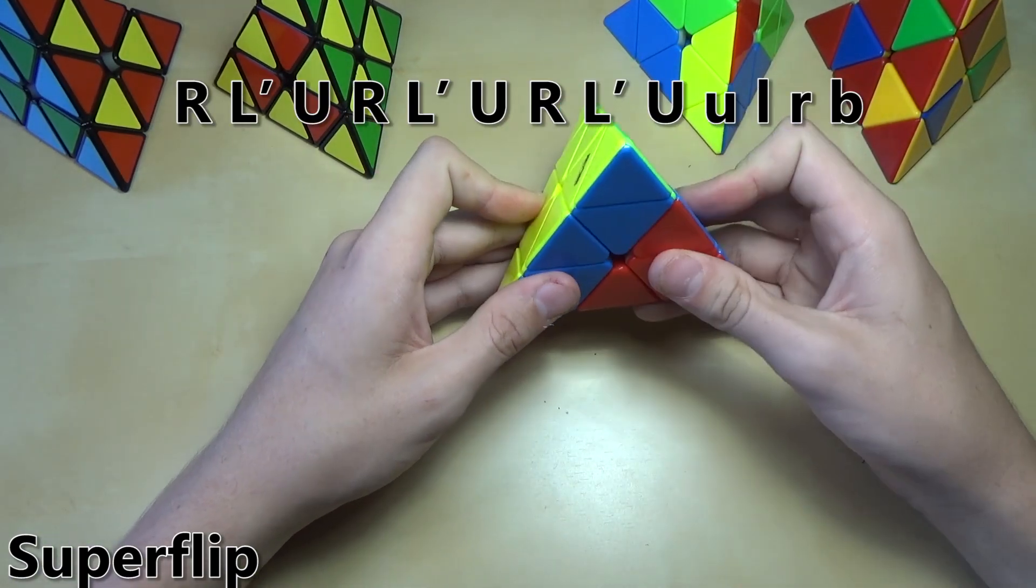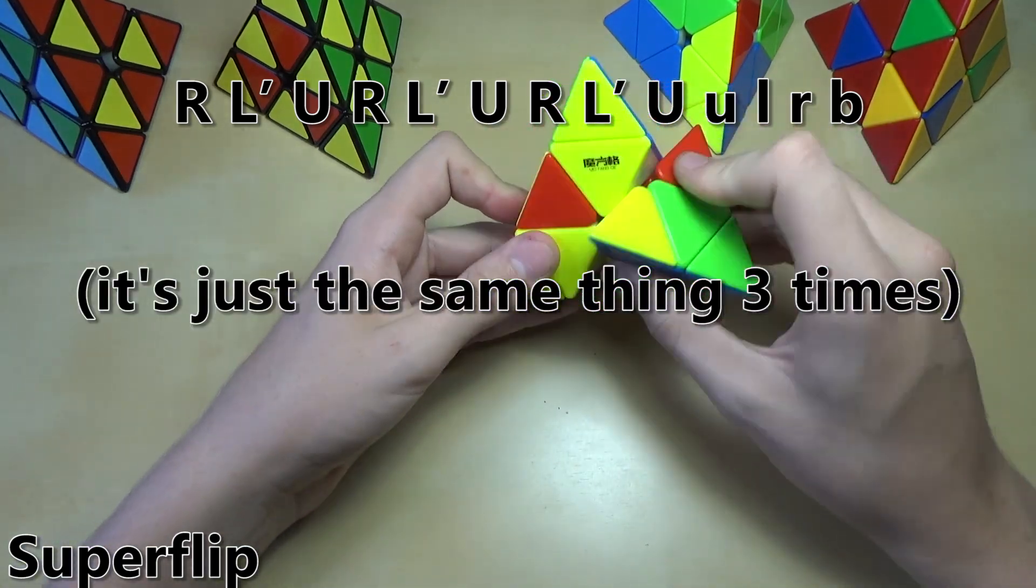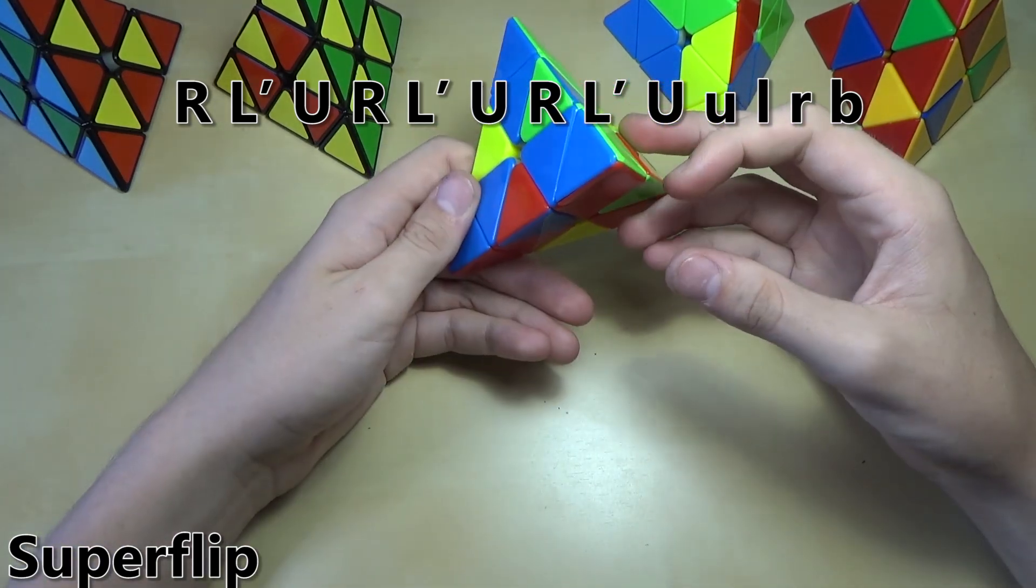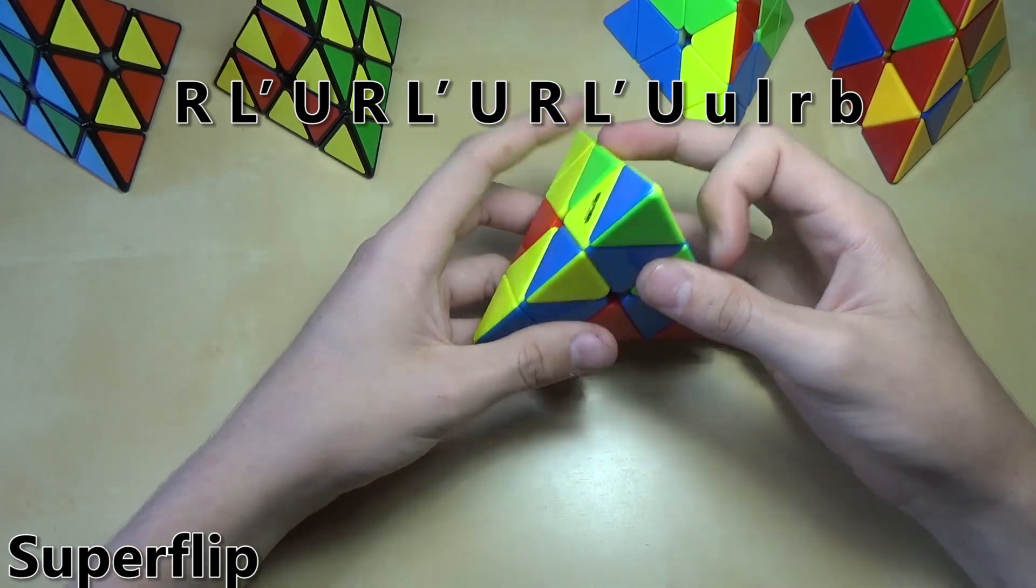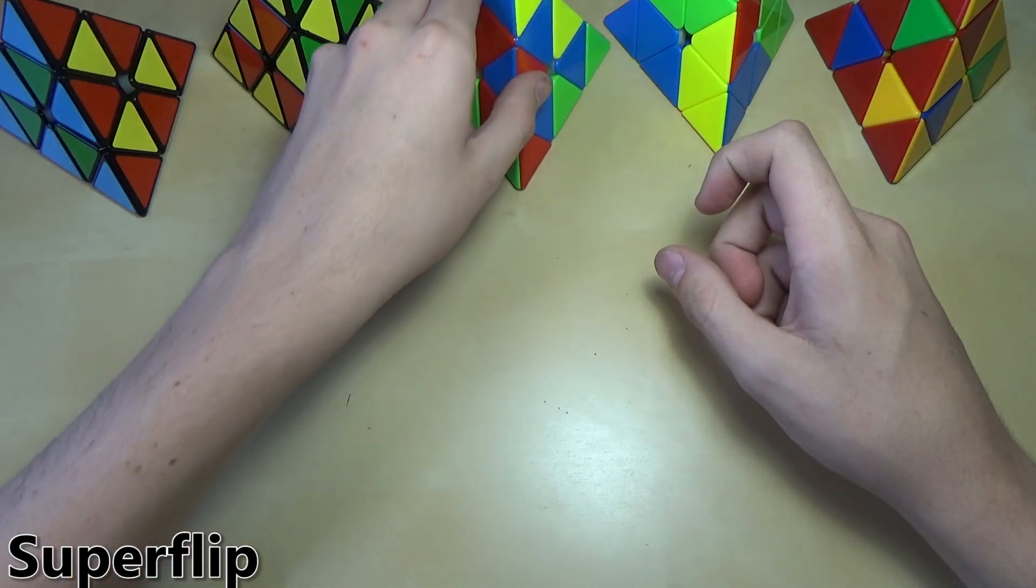You hold it in any orientation. Do R L prime U, R L prime U, R L prime U. And then you can do R U L B on the tips. And there we go. That one was pretty easy.